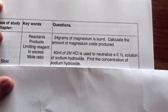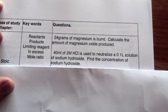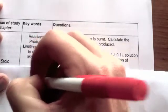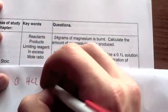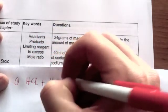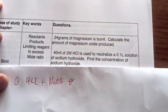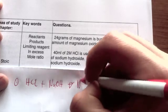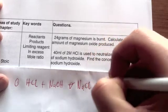First things first, an equation. So we're going to write an equation. We've got hydrochloric acid, HCl, adding to sodium hydroxide, forming something else. Well, as you know, this is going to form a salt, NaCl, plus water.